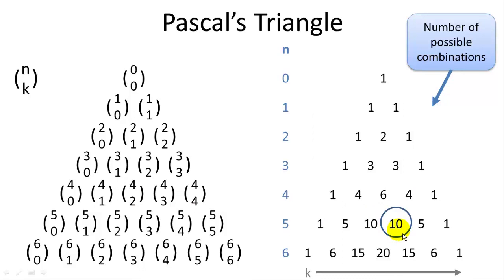So Pascal's triangle is an easier way to look at the number of possible combinations by simply summing the two above it. And you can do that until you get to the top row which is one, which is your base case.